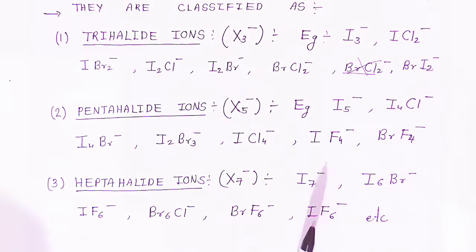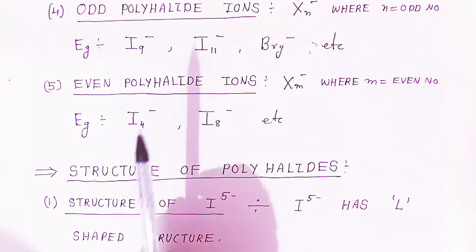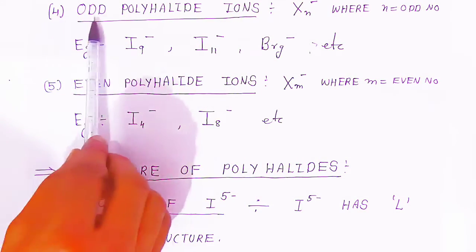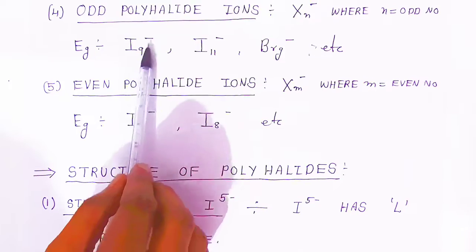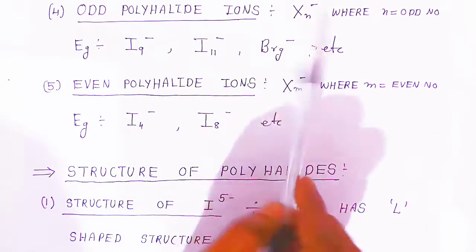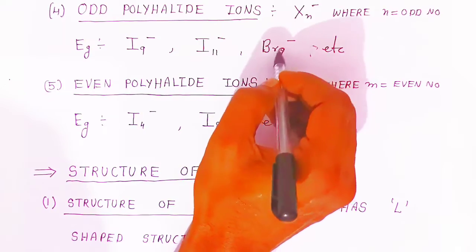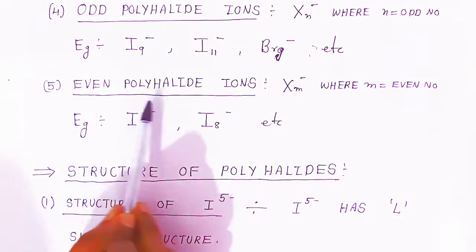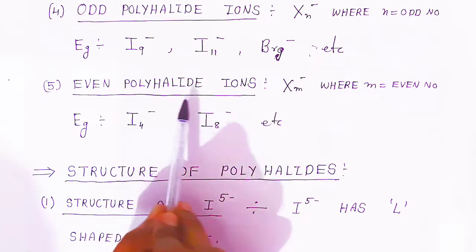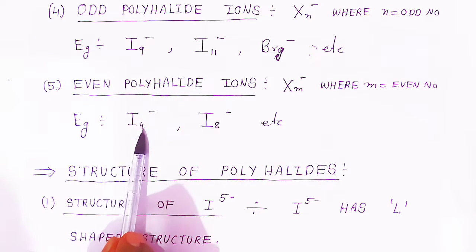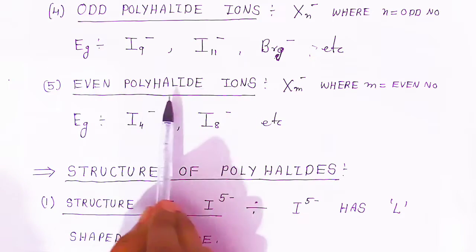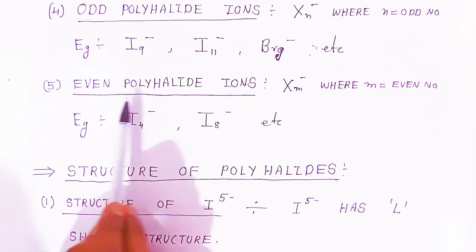A fourth type is odd polyhalide ions, represented as XN where N is an odd number greater than seven, such as I9-, I11-, and Br9-. There are also even polyhalide ions, represented as X minus YM where M is an even number, for example I4 (four is even), and I8-. So we have classified polyhalides in five ways.